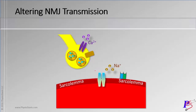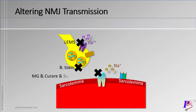Going back to our NMJ diagram: Lambert-Eaton syndrome blocks the voltage-gated calcium channels, so calcium cannot come in, the vesicles cannot release, and you don't get muscle contraction. Similarly, botulism toxin — like Botox injections — prevents the synaptic vesicles from being released, so without the neurotransmitter, you cannot have contraction. At the acetylcholine receptor, myasthenia gravis, curare, and succinylcholine all act. Succinylcholine is also used for intubation.